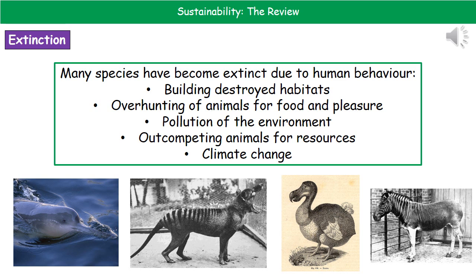We've got the dodo bird, which was only ever present on the island of Mauritius. When humans first went there, we decided they were nice big birds that were pretty tame because they had not encountered humans before, so we killed and ate them. And then we've got the quagga on the right as well. Those are just four of the many species now extinct as a result of human behaviour.